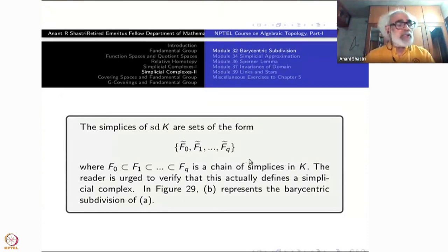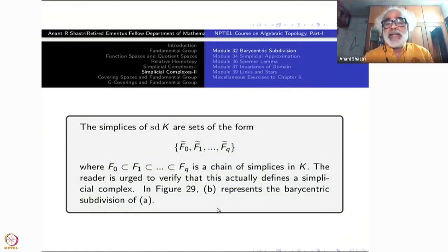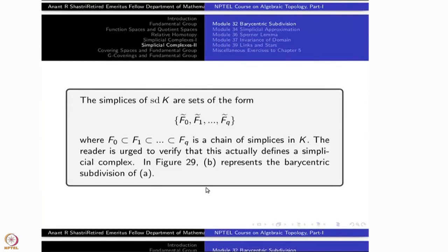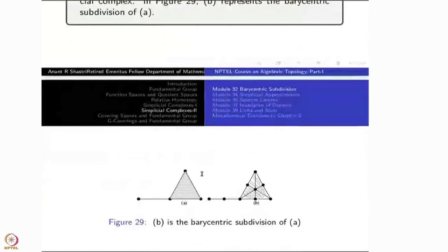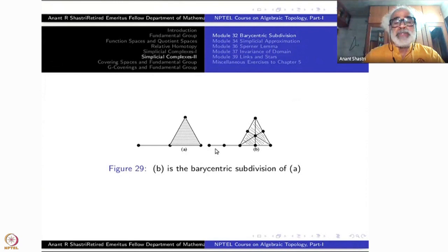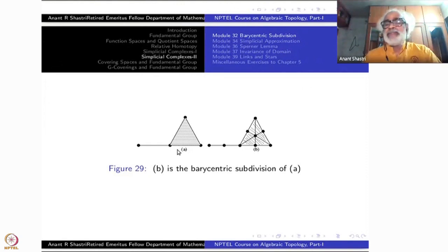What is it good for? Just like our simplicial complexes are defined abstractly, sd(K) is also defined abstractly, except that the points are not abstract points now — they are already points of the geometric realization |K|. So in that sense, they are much better geometrically. Here is a picture: the original simplicial complex has one edge and one triangle.